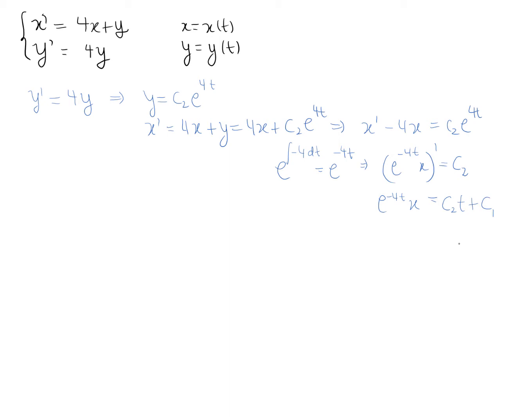The linear function looks like c2 times t plus a constant I'll denote c1. I used c2 for the constant related to y since it's the second function, and now we see c1 appearing. Solving for x, we multiply both sides by e to the 4t, giving x equals c2 t e to the 4t plus c1 e to the 4t.